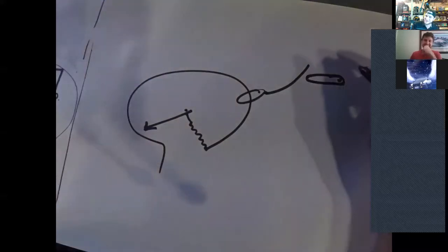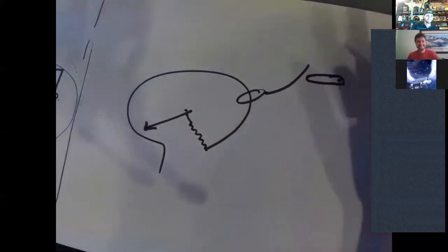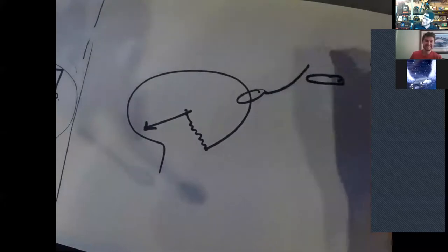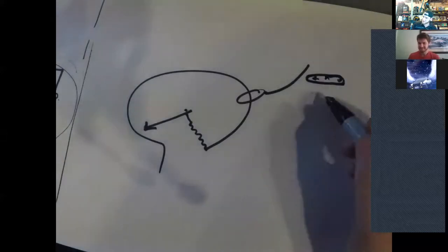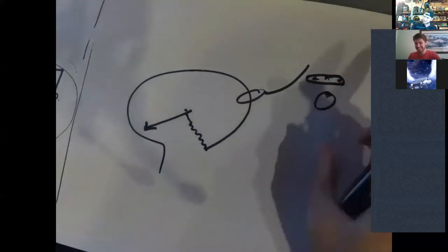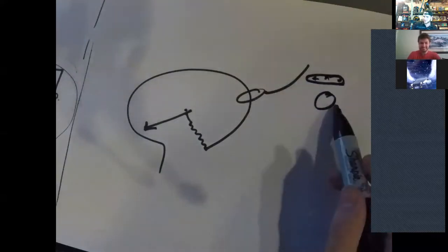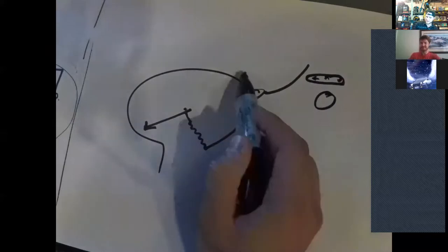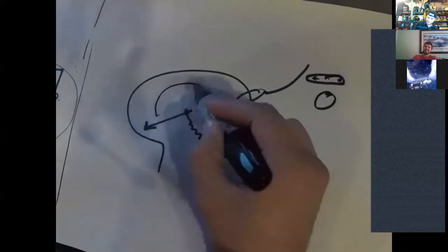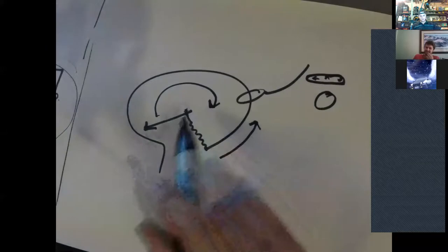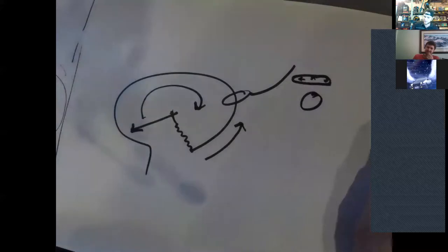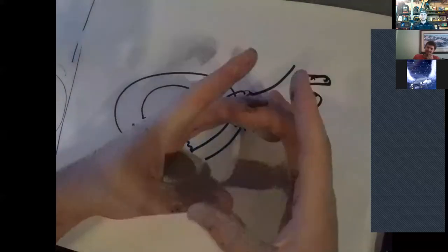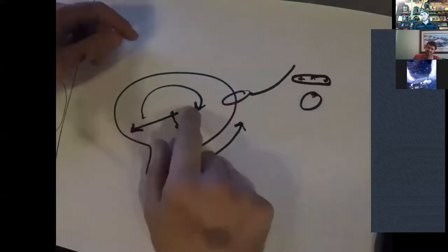So you got your shepherd's crook shaped Bourdon tube, your linkage to your pivot needle. And the cross section here is kind of ovular. And so if you increase pressure of your fluid, it's going to want to straighten or it's going to want to expand into a circular shape. And so that expansion just causes a straightening of this tube. It's going to pull on that linkage and your needle is going to spin.